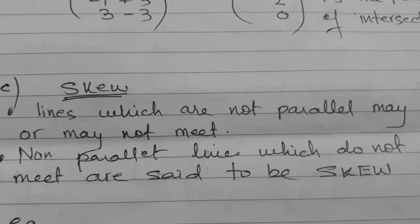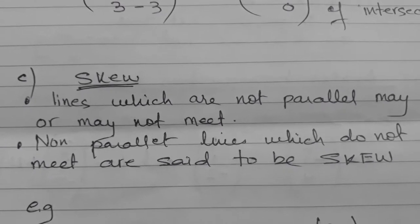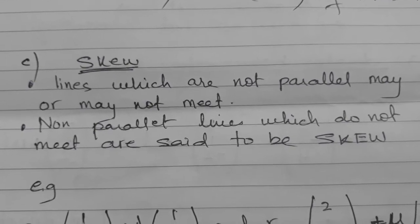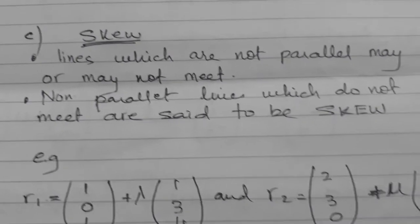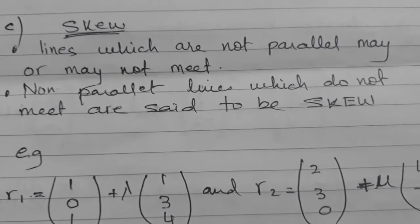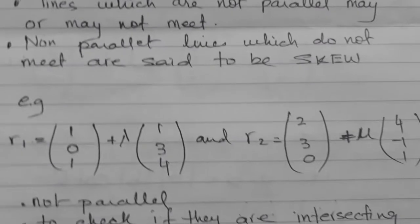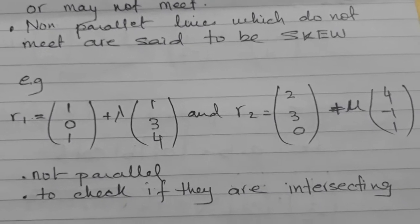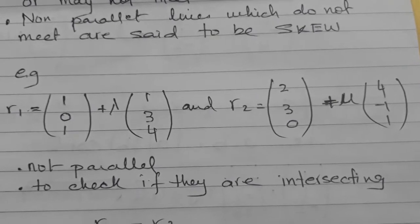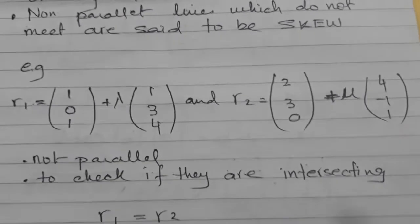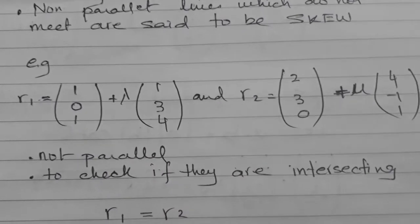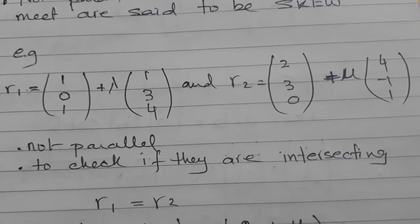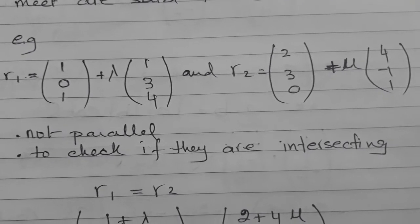We know that lines which are not parallel may or may not meet. The lines which are not parallel and do not meet are said to be skew lines. I have tried to write down everything as I explain so that you can follow along. Let's take an example of two lines, R1 and R2, and see whether they are parallel, intersecting, or skew lines.